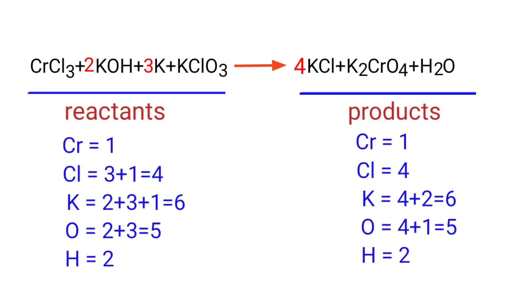The equation is now balanced. There are one chromium atom, four chlorine atoms, six potassium atoms, five oxygen atoms, and two hydrogen atoms on both sides.